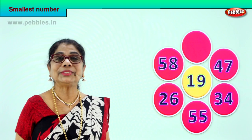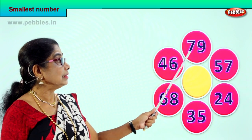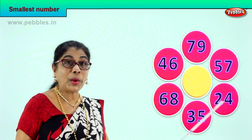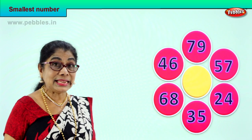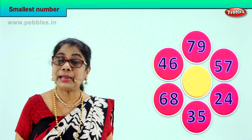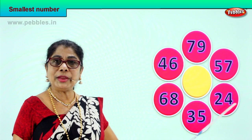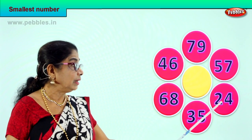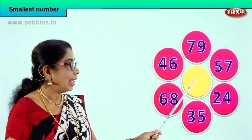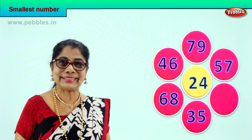Did you enjoy finding the smallest number? Good. Let's go to the next exercise. 79 has seven tens, 57 has five tens, 24 has two tens, 35 has three tens, 68 has six tens, and 46 has four tens. Among these numbers, which has the least tens? 24 — there are only two tens in this number, so 24 is the smallest. We take two tens, 4 ones — 24 — and put it in the middle.